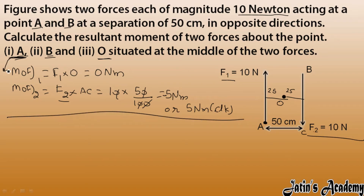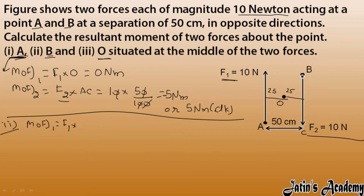For Part 2, the body is fixed at point B. The moment due to F1: force is 10 Newton, and the perpendicular distance from B to the line of action of F1 — call it DB — is 50 centimeters. So: 10 × (50/100) = 5 Newton meters.